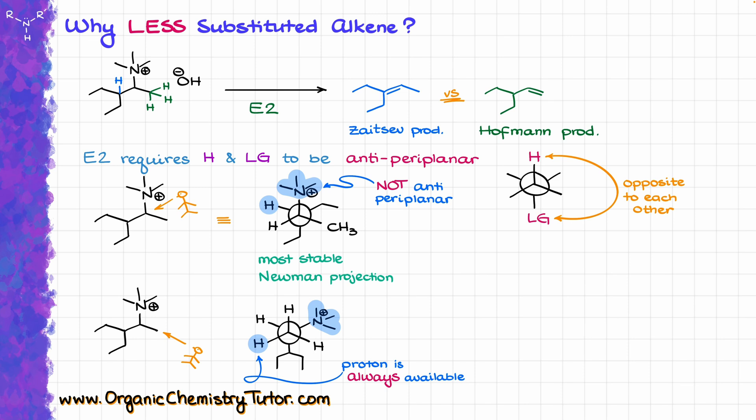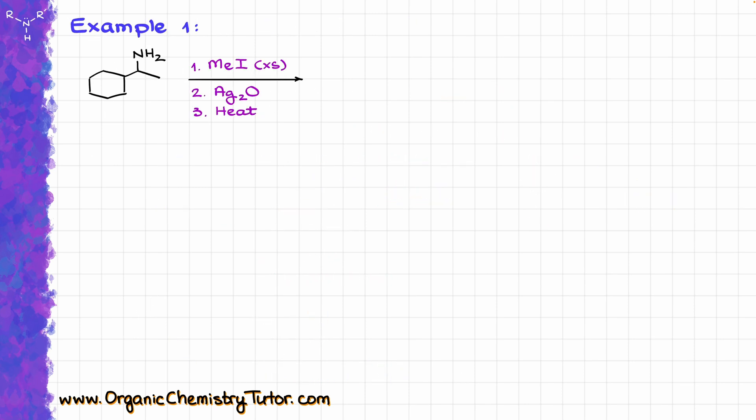Let me illustrate that with a couple of examples. For my first example, I have this molecule. Step number one is exhaustive methylation, so I'm going to draw the product of that right away. The next step is the reaction with silver oxide, which takes my I- and replaces that with OH-.